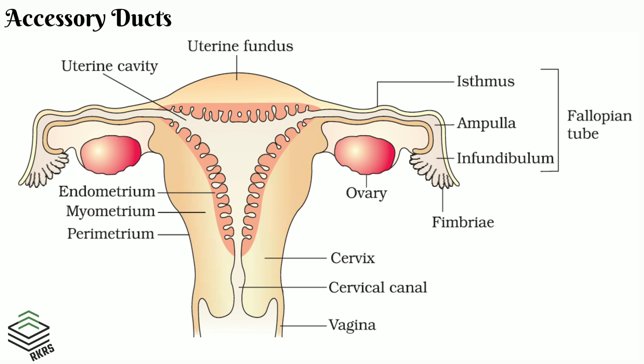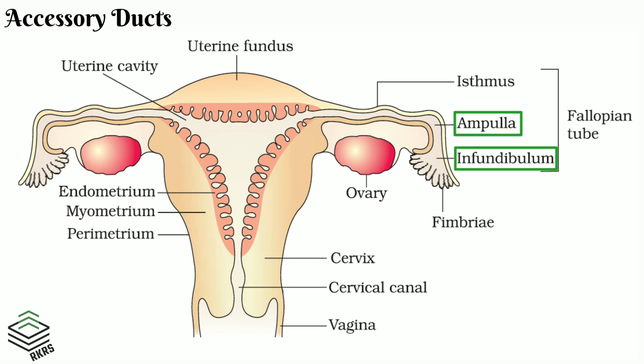Each oviduct is about 10 to 12 cm in length and has three distinct parts. The three distinct parts are called the infundibulum, ampulla, and isthmus.